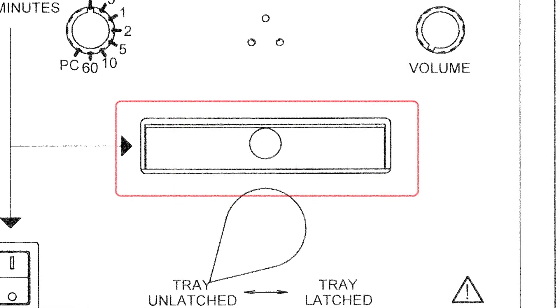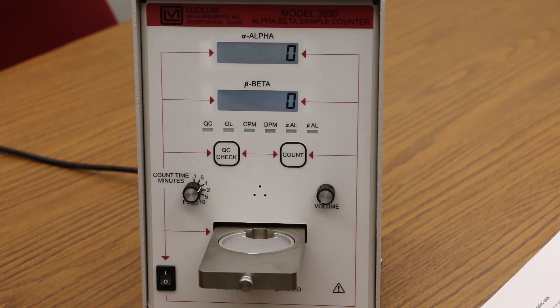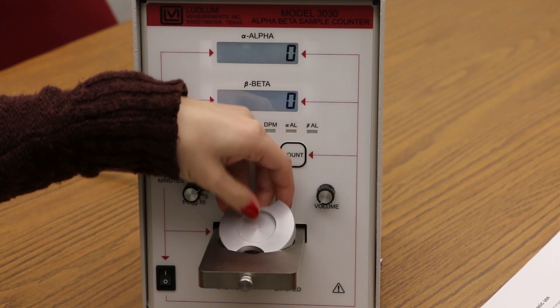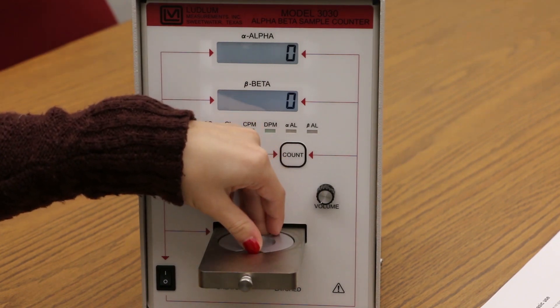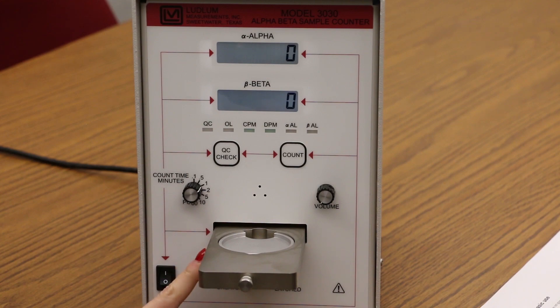A sample drawer that is used to hold the sample during a count cycle. Inside the sample drawer is a reversible tray insert. The insert can hold samples up to either two and a half centimeters or five centimeters in diameter and is one centimeter thick. The tray insert is held in place by a set screw on the left side.